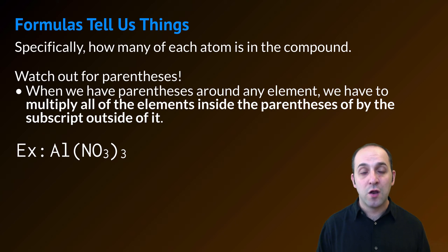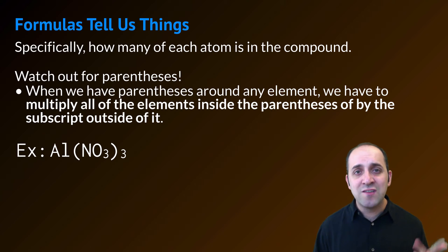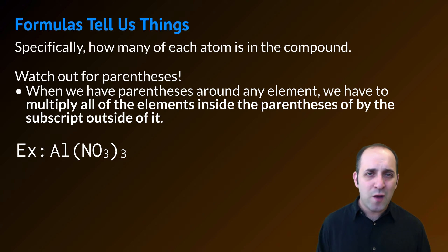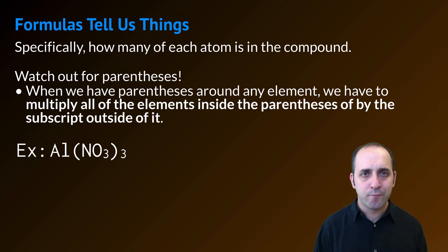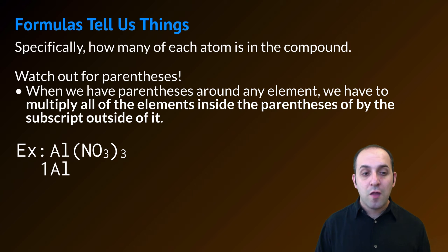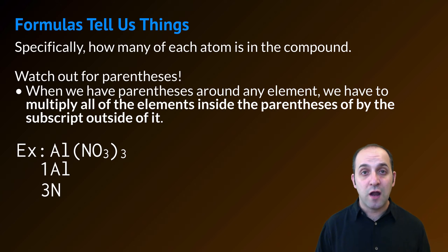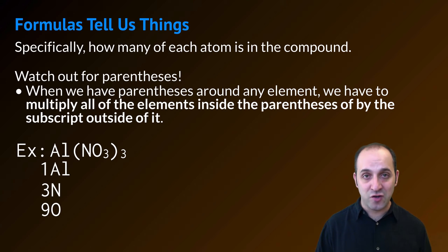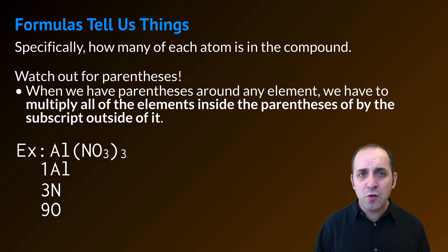Here's an example: aluminum nitrate. Can you figure out how many aluminums, nitrogens, and oxygens there are in this compound? Pause the video and try it, and then we'll go through it. Within this compound, there's one aluminum. There are three nitrogens because we have one nitrogen in a nitrate, and three nitrates. And there are nine oxygen atoms.